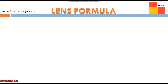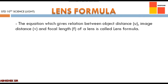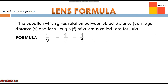Next topic is the lens formula — an equation giving the relation between object distance U, image distance V, and focal length F of a lens. This is a similar concept to what we have seen in mirror formula.